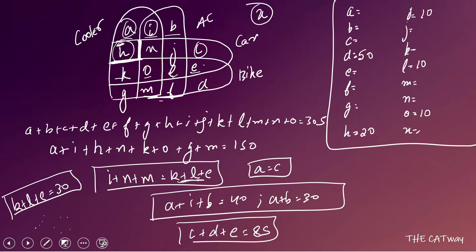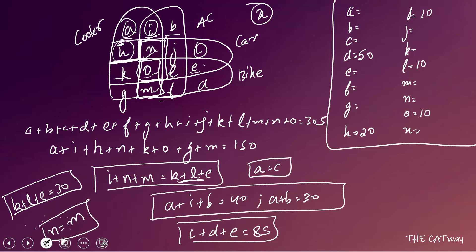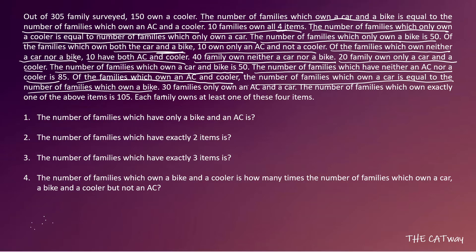Of the families which own AC and a cooler — that is I, N, O, M — the number which own a car equals the number which own a bike. Car owners here give N + O, bike owners give O + M, so N + O = O + M, which means N = M.